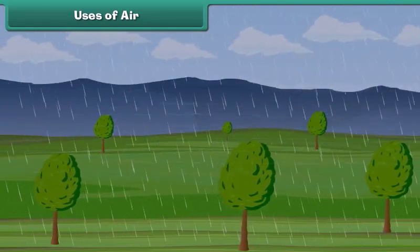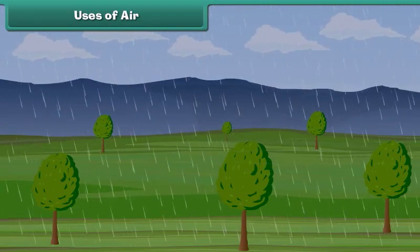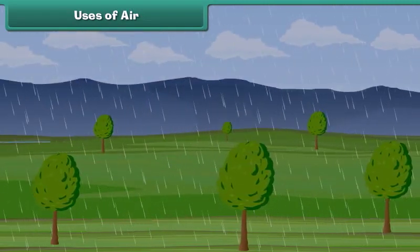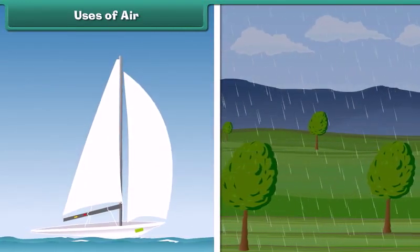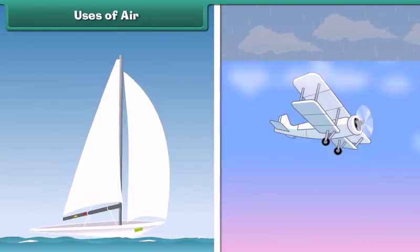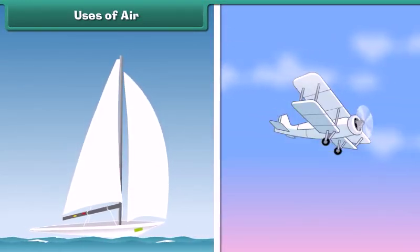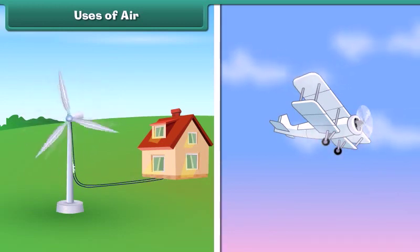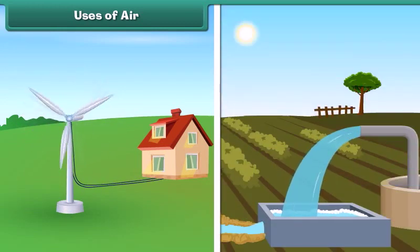Moving air is known as wind. Wind moves clouds and causes rain. Wind helps sailboats and gliders to move. The power of wind is also used to generate electricity and to help pump water.